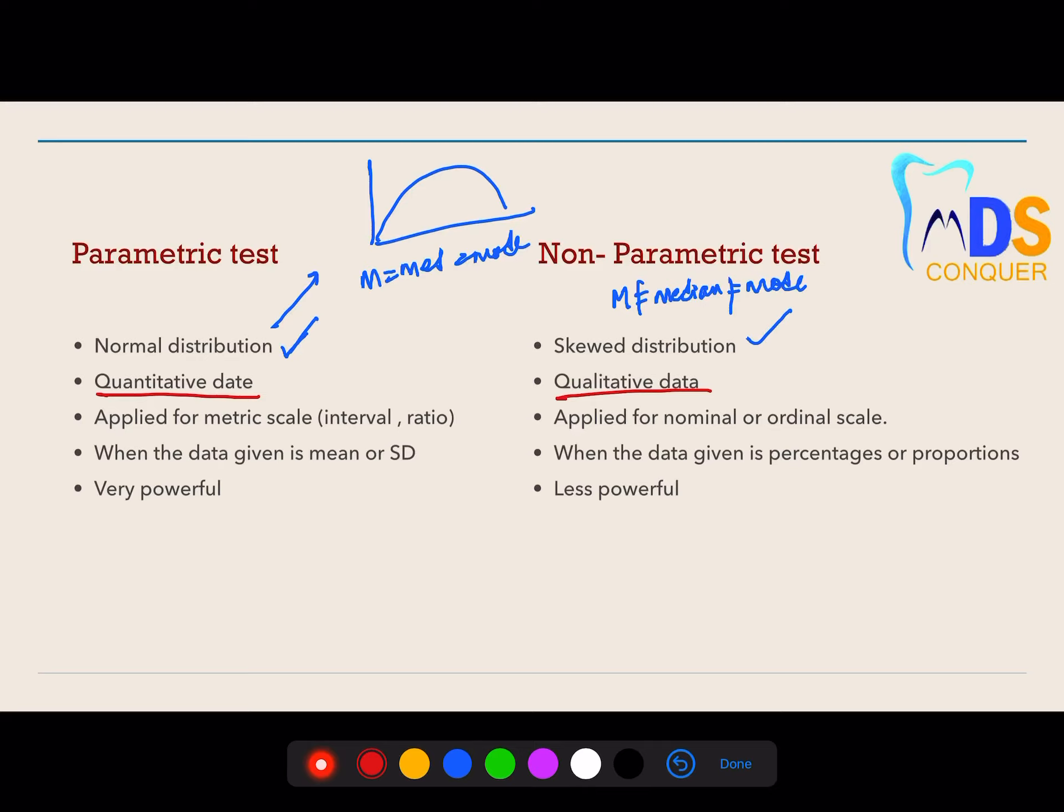Parametric tests are regularly used for metric scales—the interval scale and the ratio scale—whereas non-parametric tests are used for nominal scale and ordinal scale. Parametric tests are used when the data represents the mean and standard deviation, whereas non-parametric tests are used when the data is percentages and proportions. Parametric tests are more powerful compared to non-parametric tests.